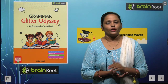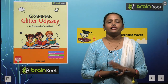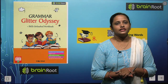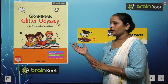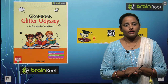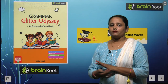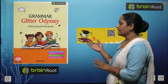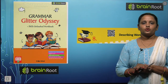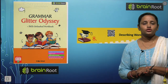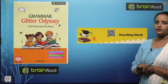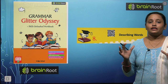Hello my dear kids, welcome back. I am Vandana and we are learning English grammar by Brain Root series. Today, here is your book and the name of your book is Grammar Glitter Odyssey, book 1. Today we are going to learn a new chapter — chapter number 8 — and the name of the chapter is describing words.